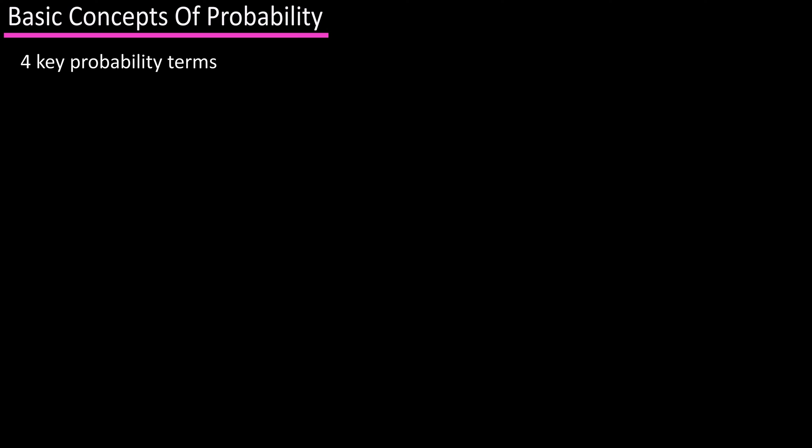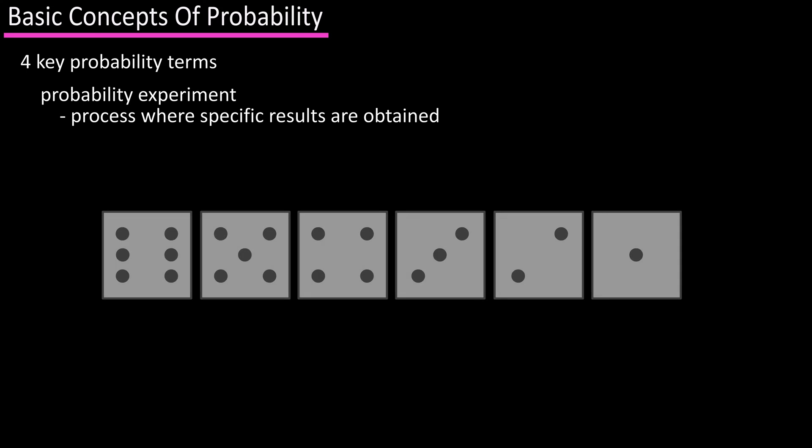There are four key terms that are often used with probability. A probability experiment, which is a process where specific results are obtained, such as rolling a die, as there are only six possible outcomes.